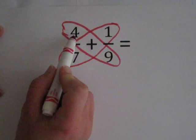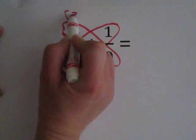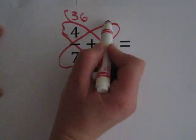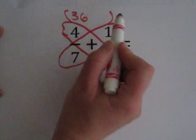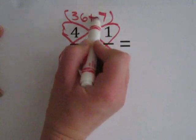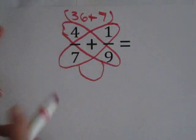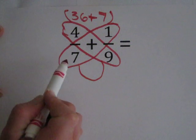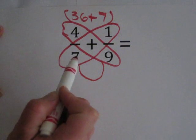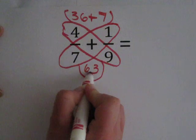9 times 4 is 36. 7 times 1 is 7. These two will be added. And then to create the bottom of our butterfly, we multiply 7 times 9 is 63.